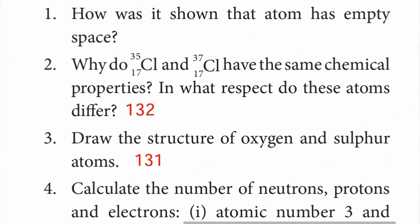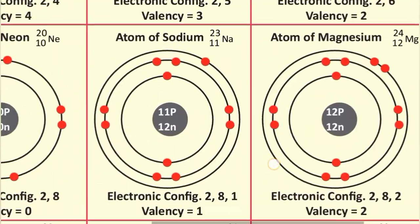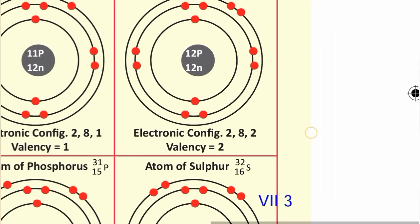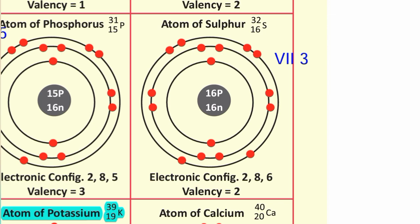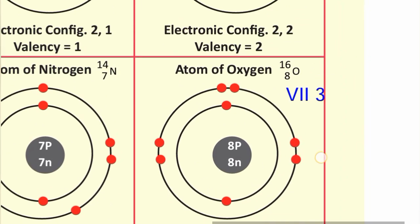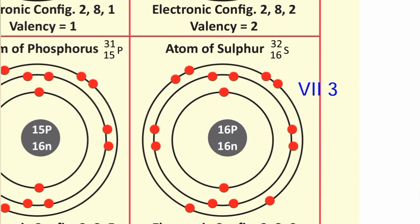Question number 3: draw the structure of oxygen and sulfur atoms. Page No. 131. For sulfur, the electronic configuration is put in the drawing. For oxygen, the atom of oxygen structure is also drawn.